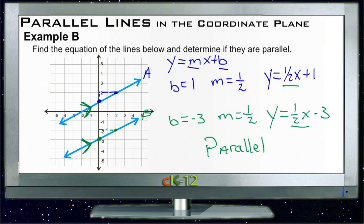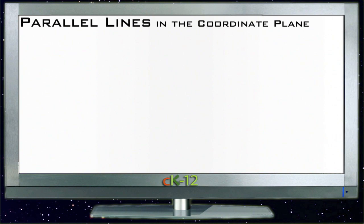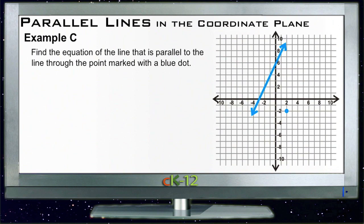Let's take a look at Example C. Example C says find the equation of the line that is parallel to the line through the point marked with the blue dot. So we need to find a line over here that goes through this other blue dot and is parallel to the first line.